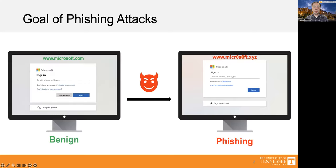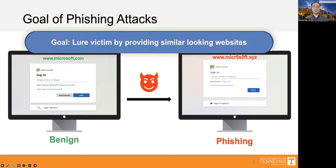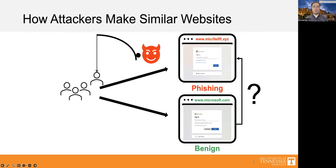Phishing attacks trick people by providing legitimate-looking websites. Phishing websites are typically created from benign websites. The goal of phishing attacks is to lure victims by creating similar-looking websites. Despite their visual similarities, the process of how these phishing websites mimic their legitimate counterparts remains a mystery.